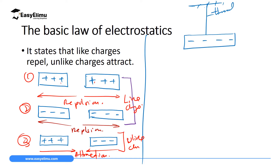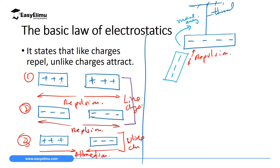From this we come up with the basic law of electrostatics, which states that like charges repel and unlike charges attract. If you have charges which are alike — positive and positive, or negative and negative — they will repel. If you have opposite charges — positive and negative — when you bring the bodies close together they will attract. You can perform this experiment simply by hanging a negatively charged material on a thread. When you bring another negatively charged material close to it, the hanging material will move away — repulsion takes place.